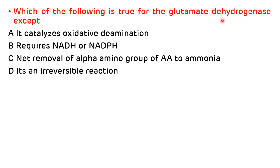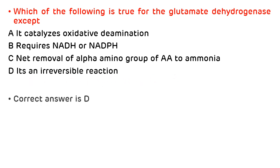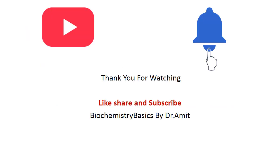Third question: which of the following is true for glutamate dehydrogenase? Options: a) it catalyzes the oxidative deamination, b) requires NADH and NADPH, c) net removal of alpha-amino group of amino acid to ammonia, d) it is an irreversible reaction. All options are correct except D — it is not an irreversible reaction, it is a reversible reaction. So the correct answer is D. These are my references — hope it was useful. Thank you for watching Biochemistry Basics by Dr. Amit. Please like, share, and subscribe.